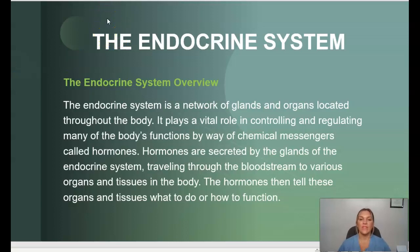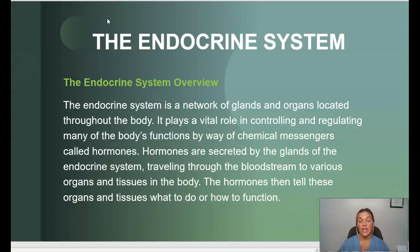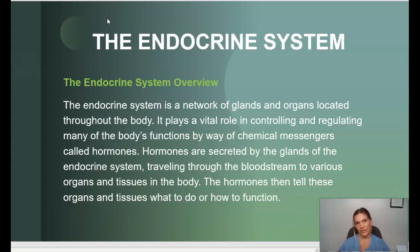Here's an overview of the endocrine system. The endocrine system is a network of glands and organs located throughout the body. They all play a vital role in controlling and regulating many of our body's functions by way of chemical messengers called hormones. These hormones are secreted by different glands within the endocrine system and travel throughout the bloodstream to various organs and tissues, instructing them how to function.